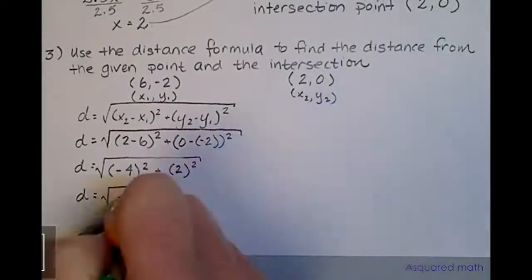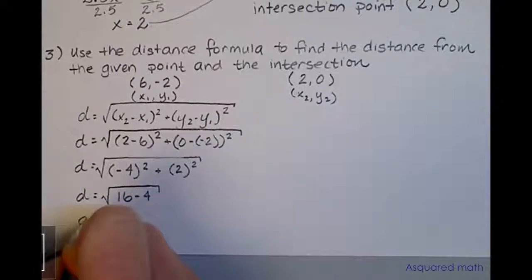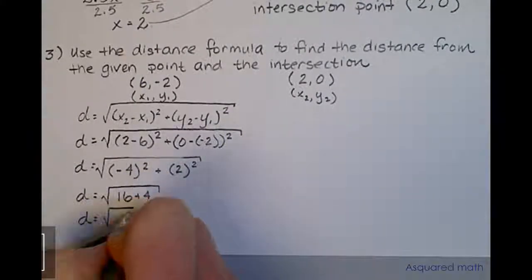So we end up with 16 plus 4, not minus 4, which gives us the square root of 20.